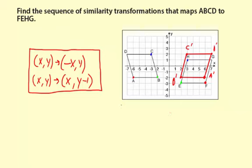Okay, so there are transformations. We have x, y going to negative x, y, which is a y-axis reflection. And then we have x, y going to x, y minus one, which is a translation of one down.